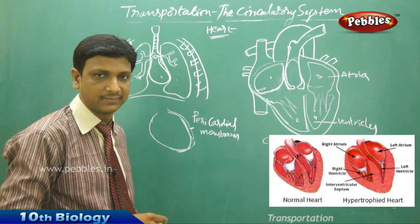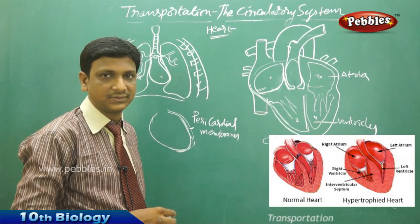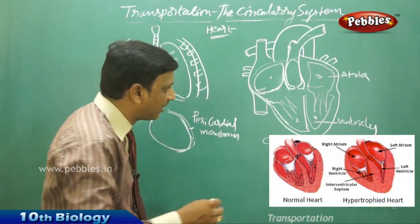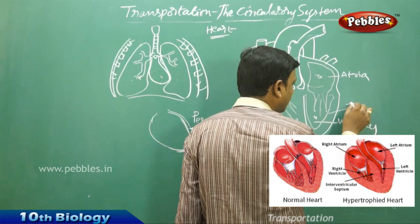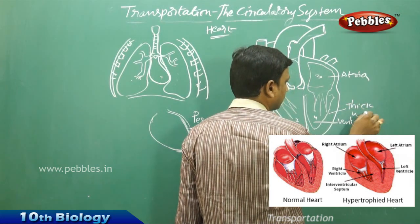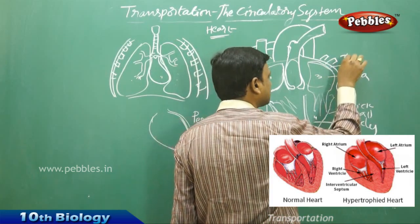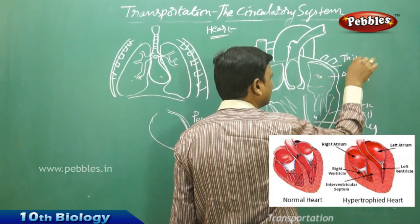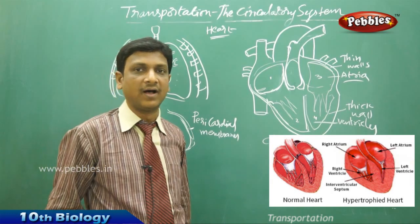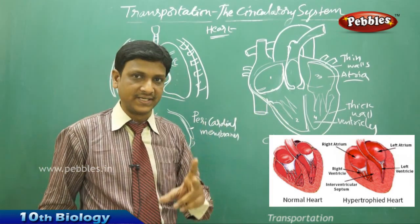If you observe, the atria are smaller compared to the ventricles. The ventricles are much bigger and moreover have very thick walls, whereas the atria have very thin walls. Now, the heart performs two major tasks.